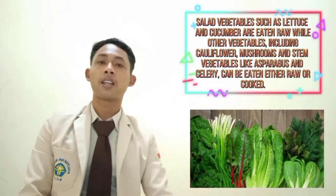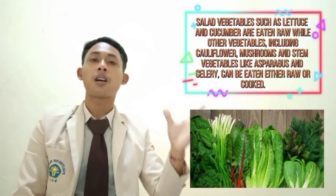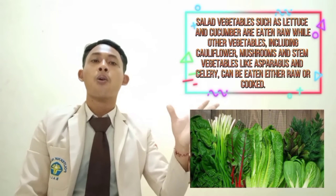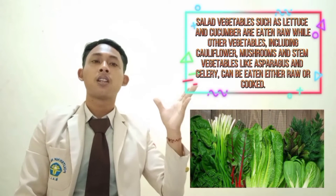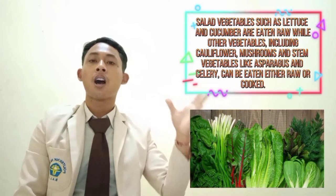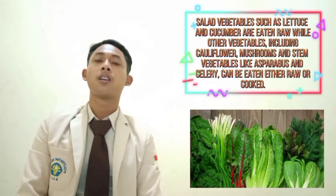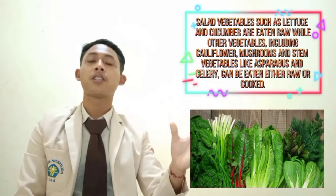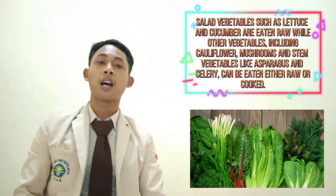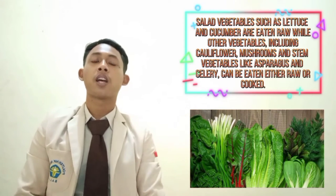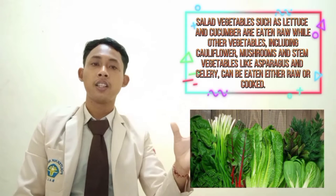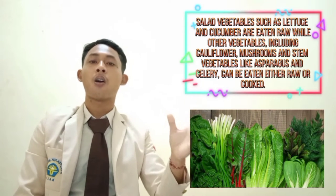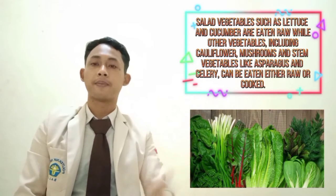Salad vegetables like lettuce and cucumber are eaten raw, while other vegetables including cauliflower, mushroom, and stem vegetables like asparagus and celery can be eaten raw or cooked.